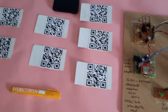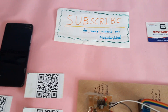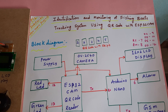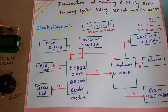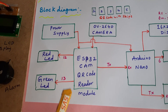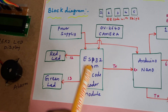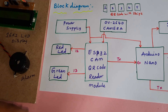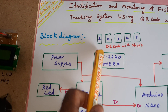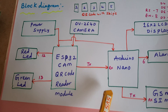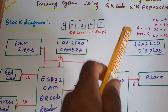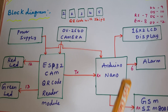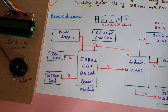Hi, we are from SVS Embedded. The project title is Identification and Monitoring of Fishing Boats Tracking System using QR code with ESP32 camera module. We are using the OV26 camera module, a red LED and a green LED to indicate whether the card is detected or not, along with an Arduino Nano board, a 16x2 LCD display, and a GSM SIM800L module.